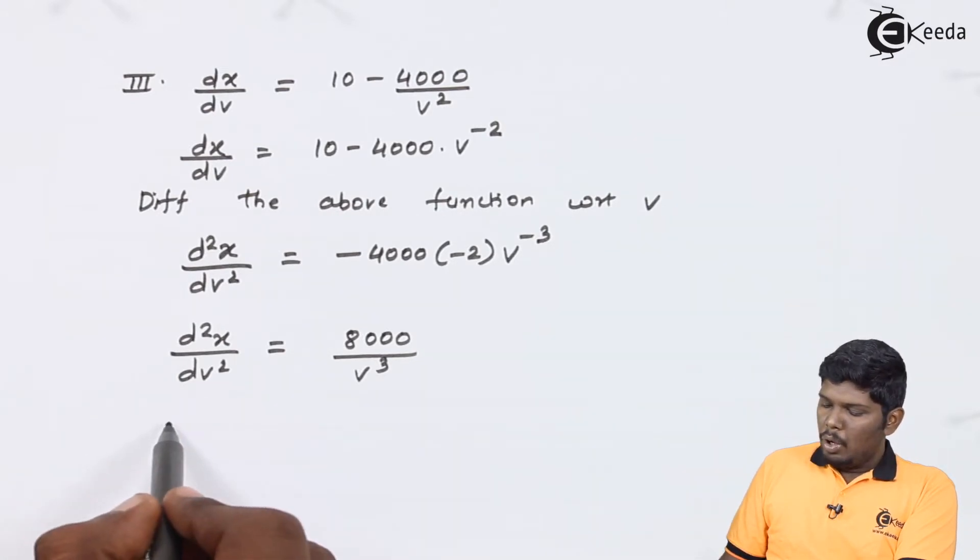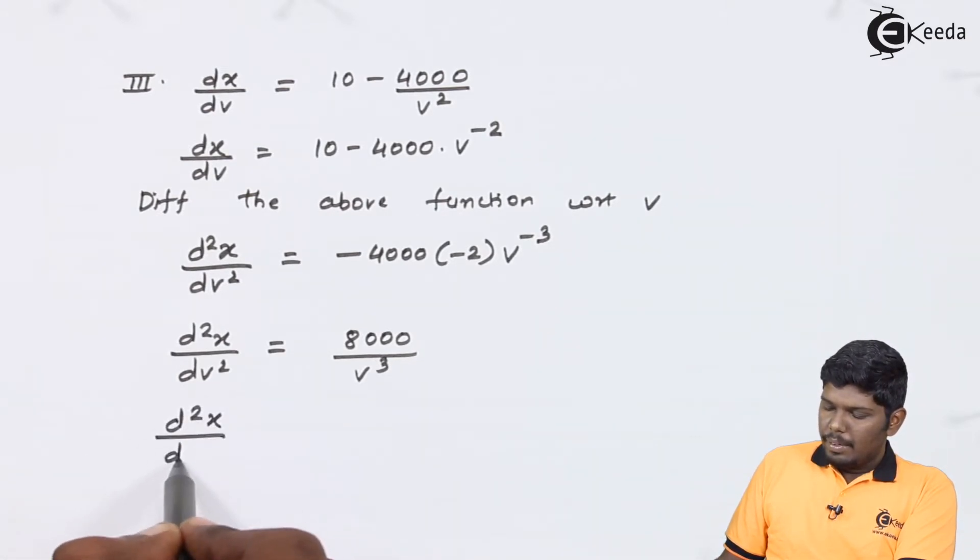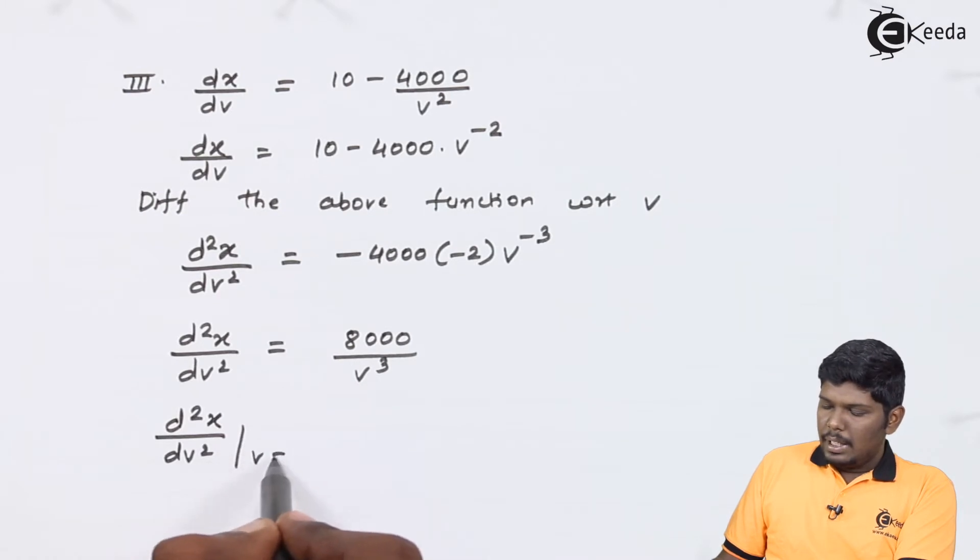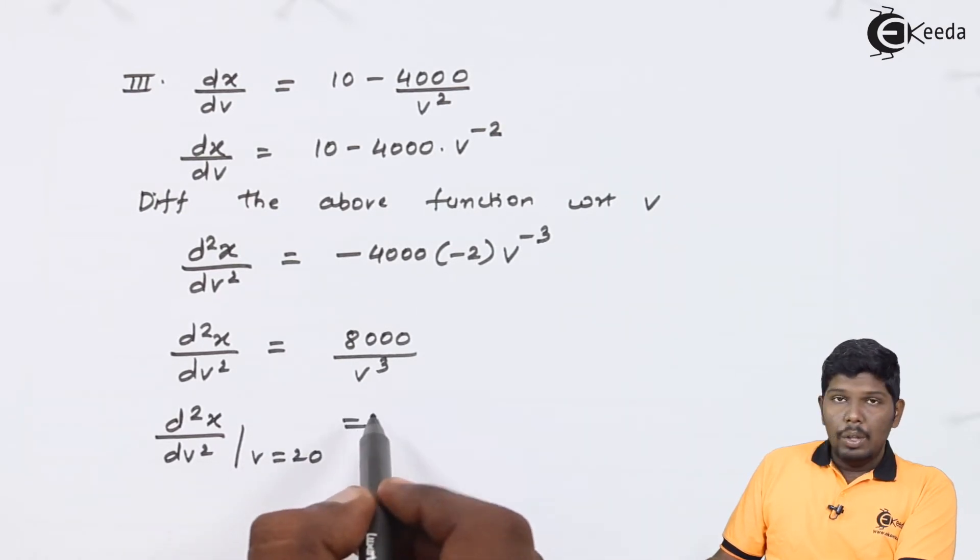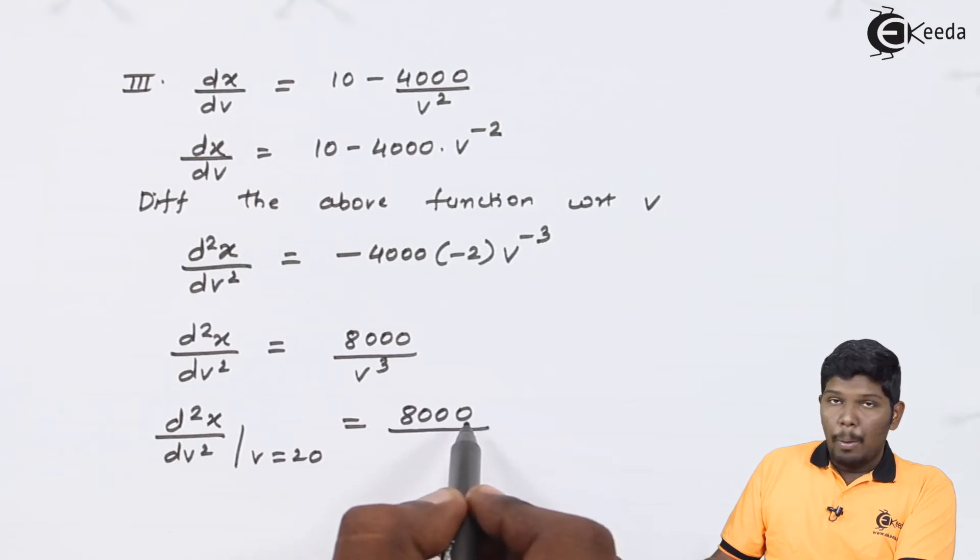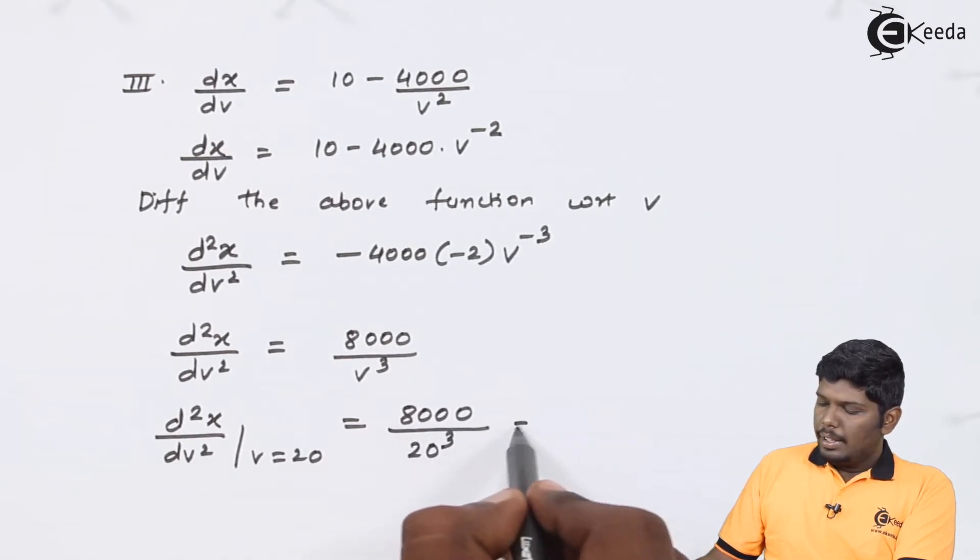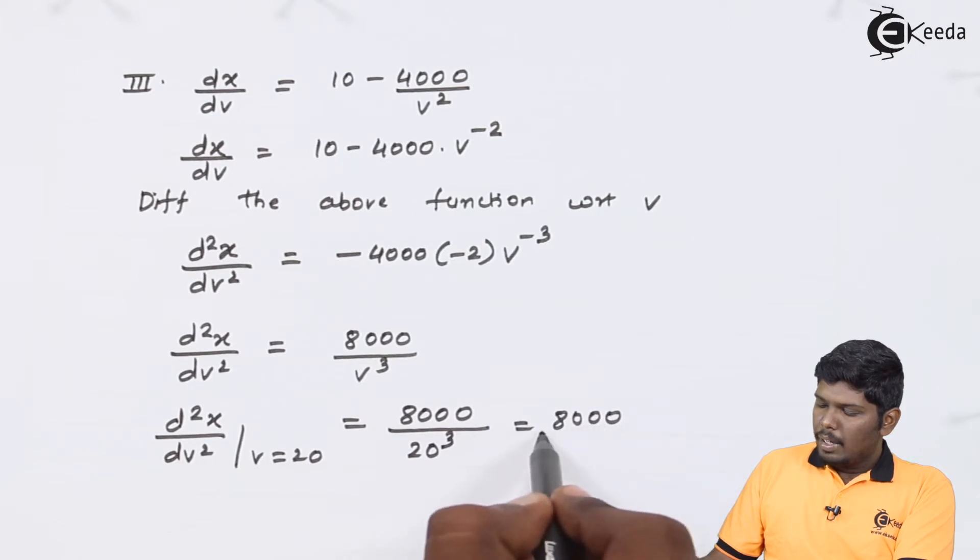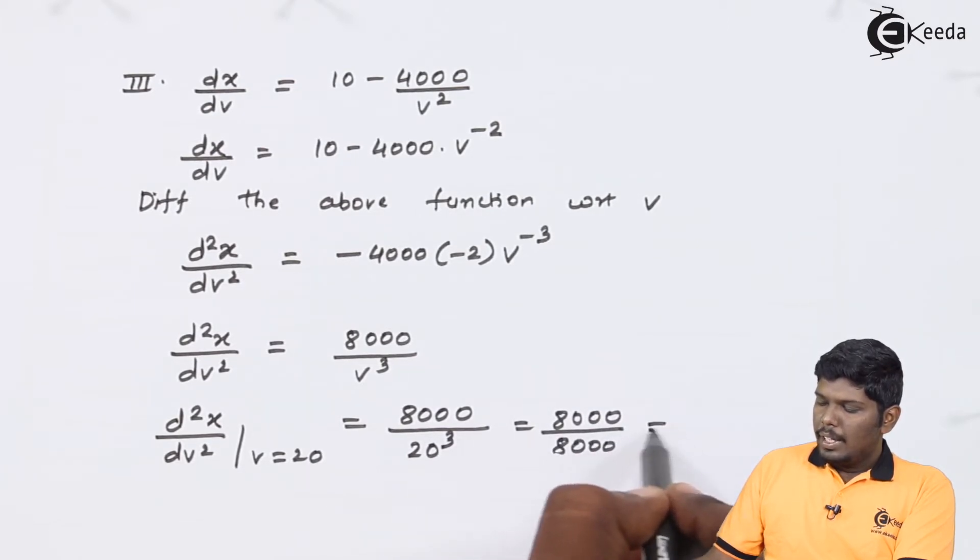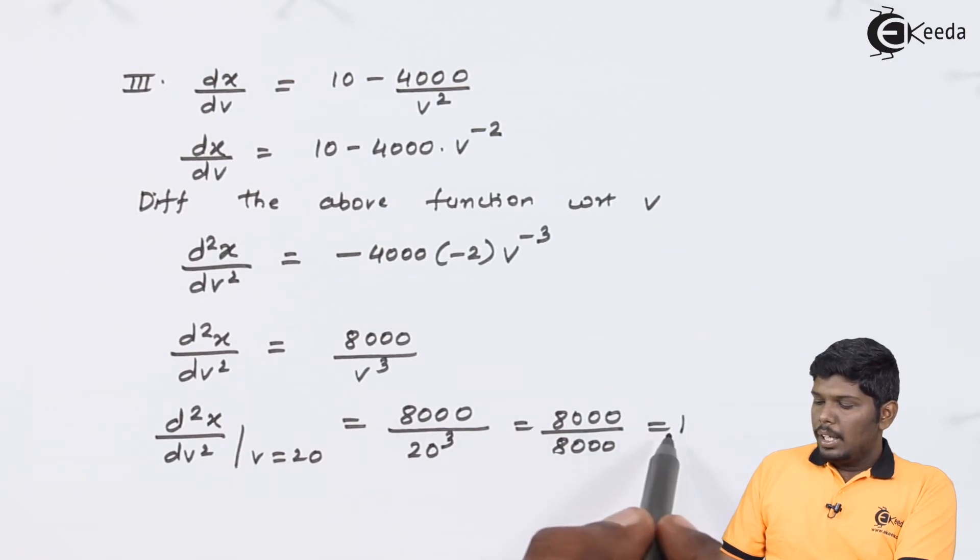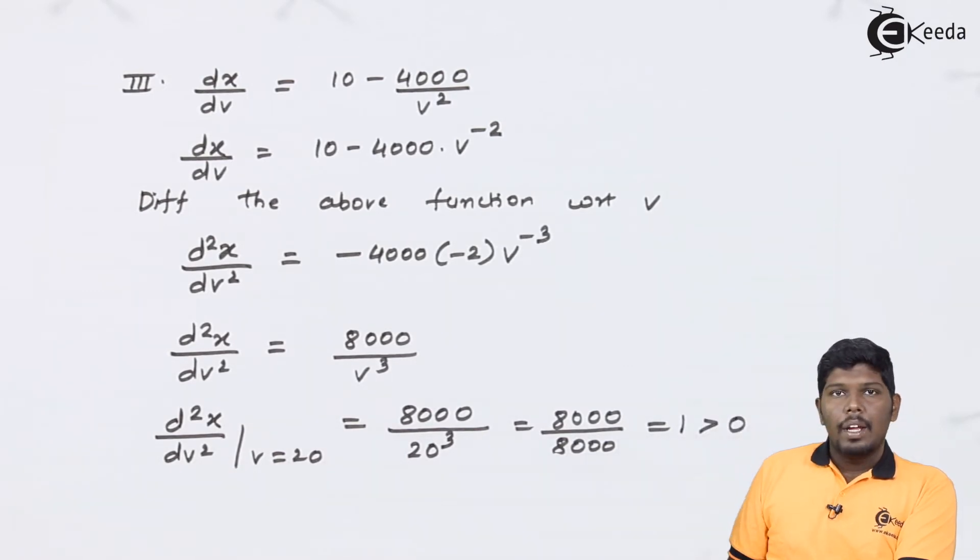Now, we will substitute the value of V, that is V equals 20. That will give you 8000 upon 20 cube, that is 8000 upon 8000, which equals 1. Here if you see, the value which we are getting is 1, which is greater than 0. If the value is greater than 0, we can say the speed of work is minimum when V equals 20.